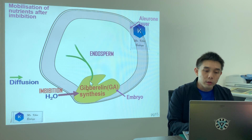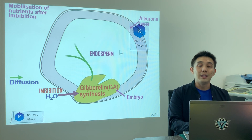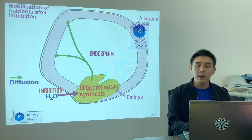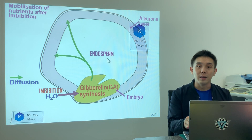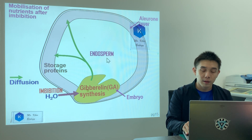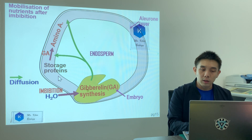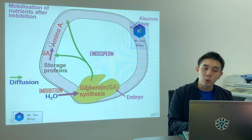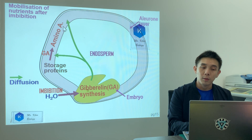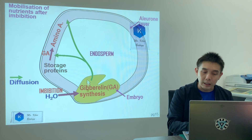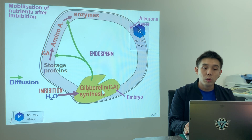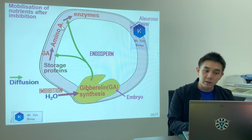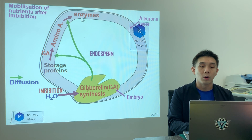Gibberellin will diffuse into what we call the aleurone layer — the layer outside the endosperm. Protein stored there will be broken down to amino acids by gibberellin. Don't forget to mention gibberellin. Gibberellin also converts amino acids to enzymes.